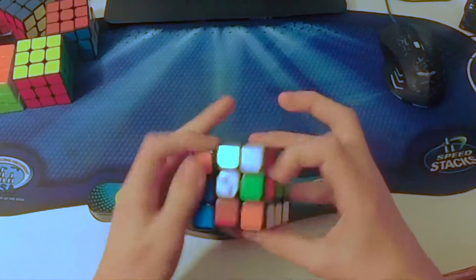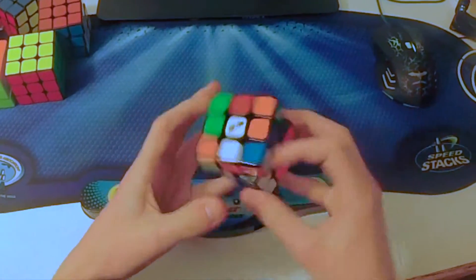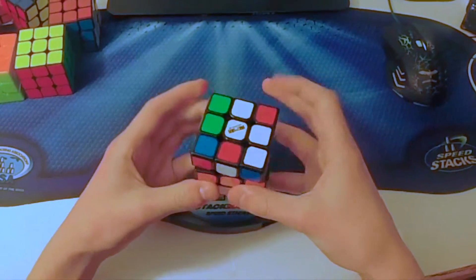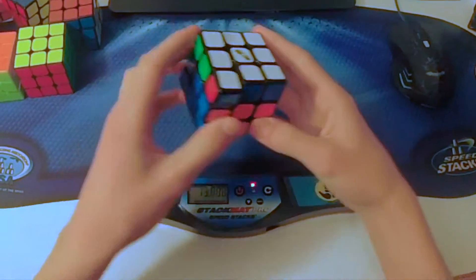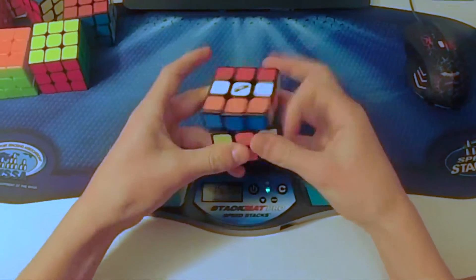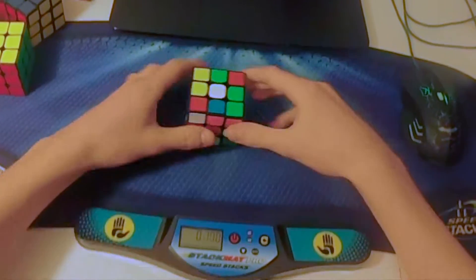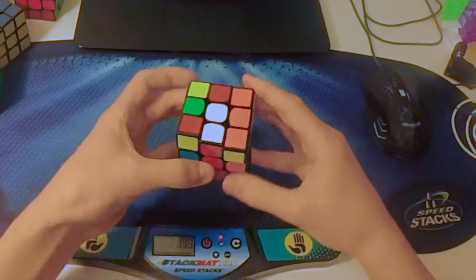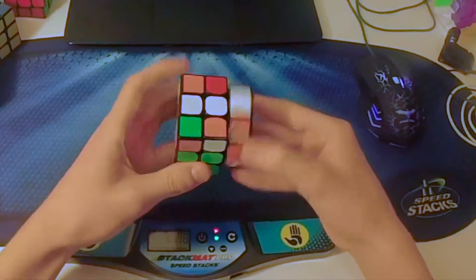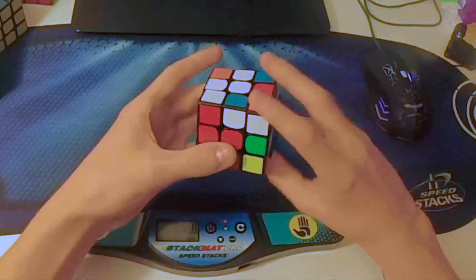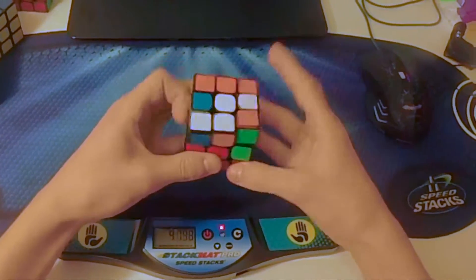So first thing, my mains for Dixon. For 3x3, I am going to be using the Thunderclap, but I haven't decided whether that's going to be my main permanently or not. For 2x2, I'm using my Dian, 4x4 my Asu, for blind the Thunderclap, and then for OH Mei Ying.